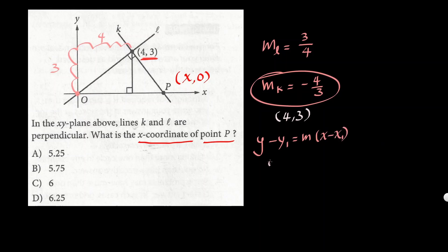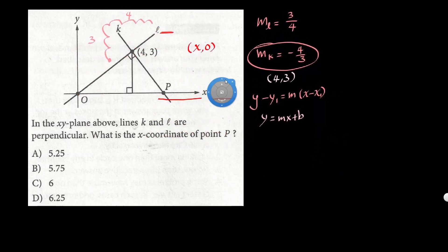We could use point-slope form (y - y₁ = m(x - x₁)) or slope-intercept form (y = mx + b) to find the equation. It doesn't really matter which one you use. Let's just use the first one.